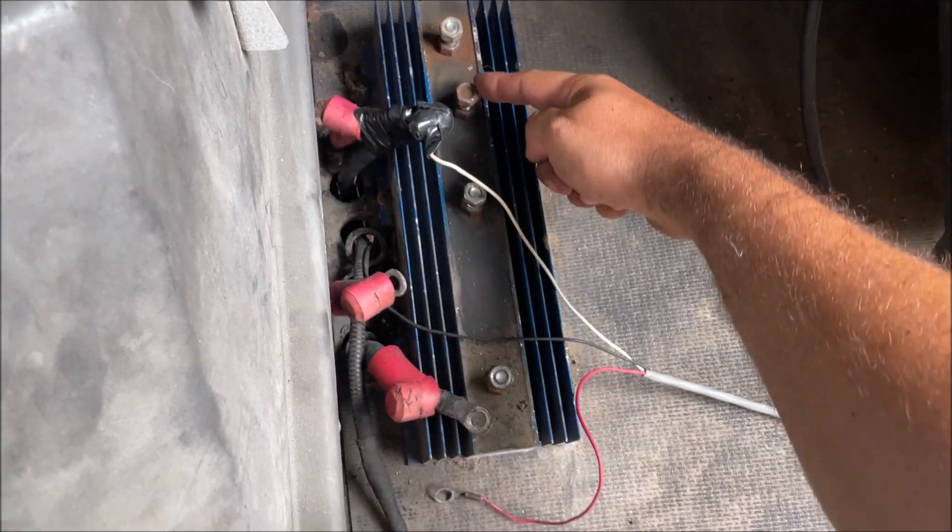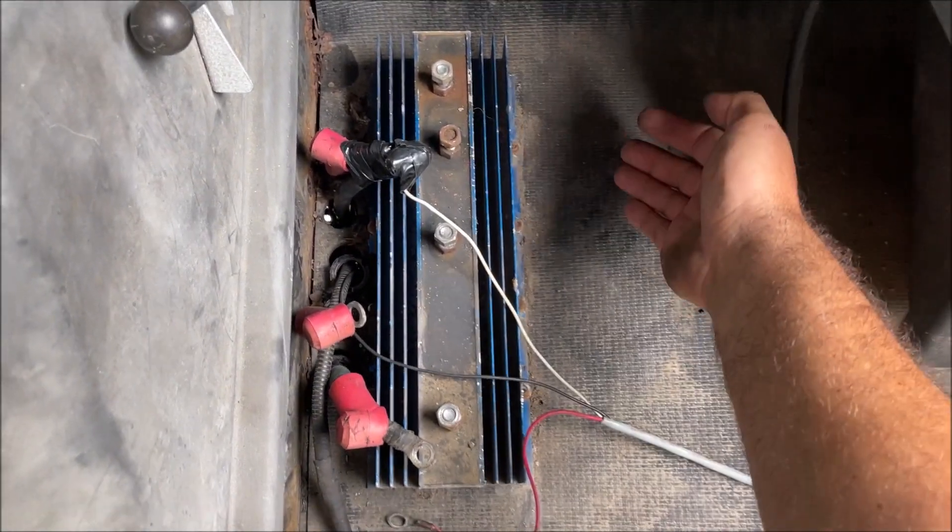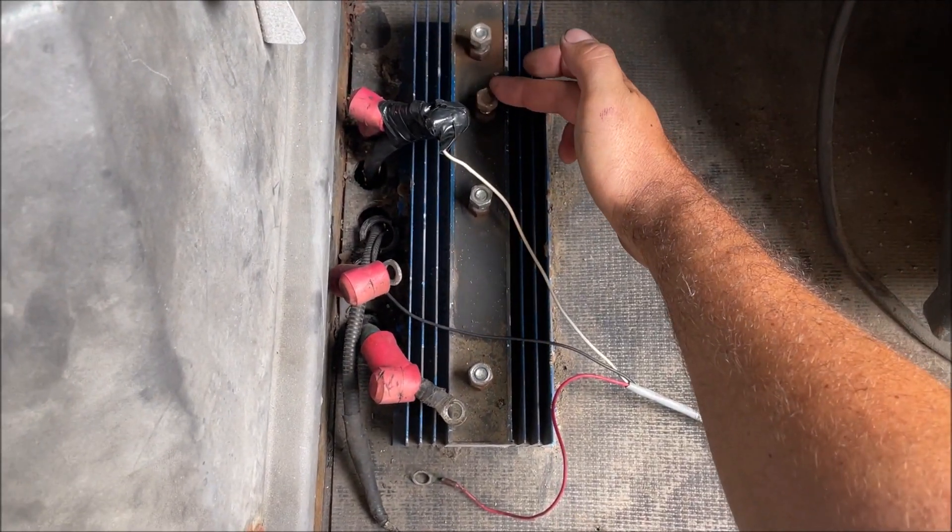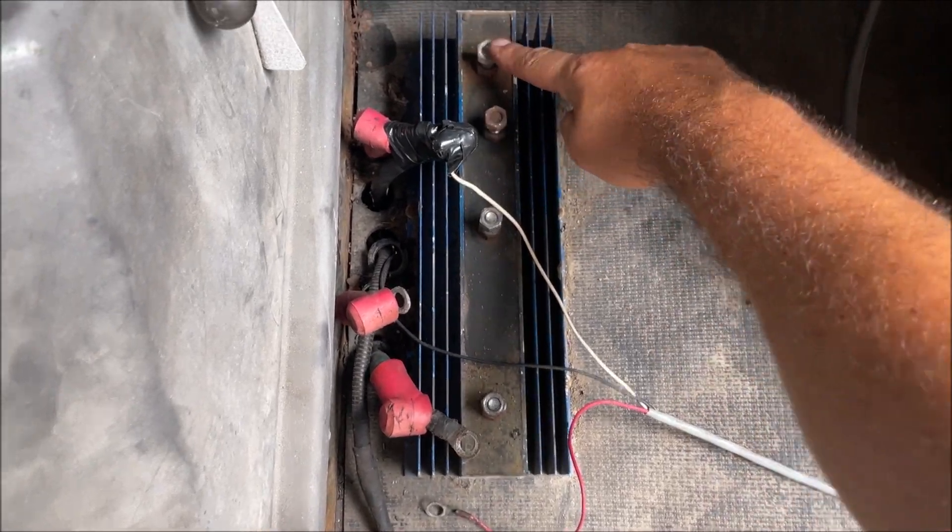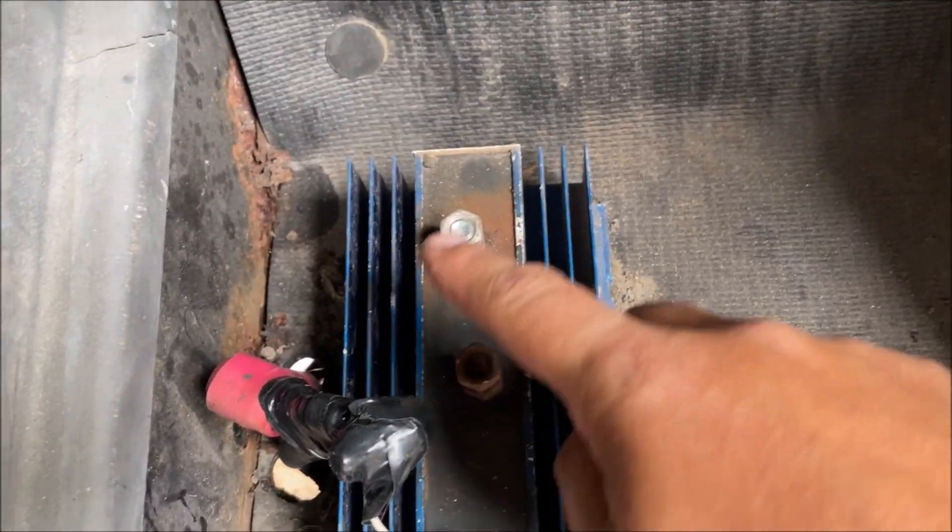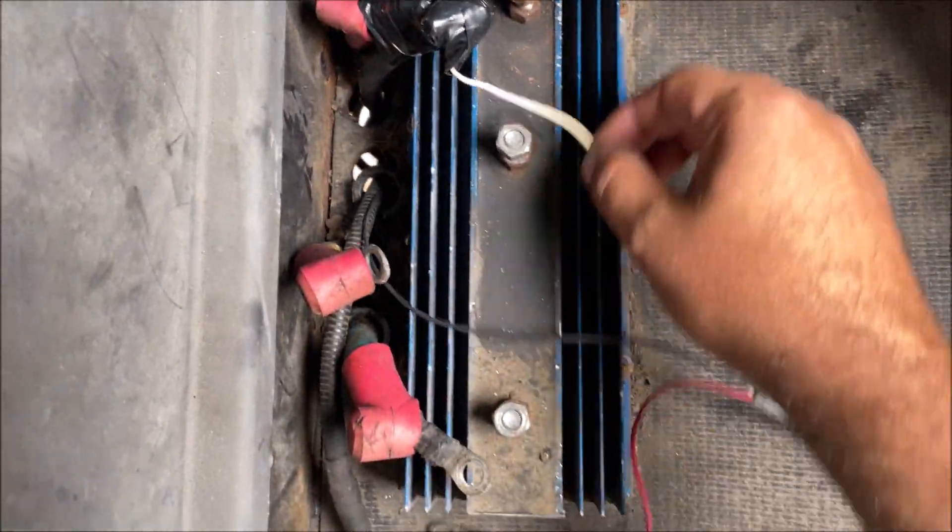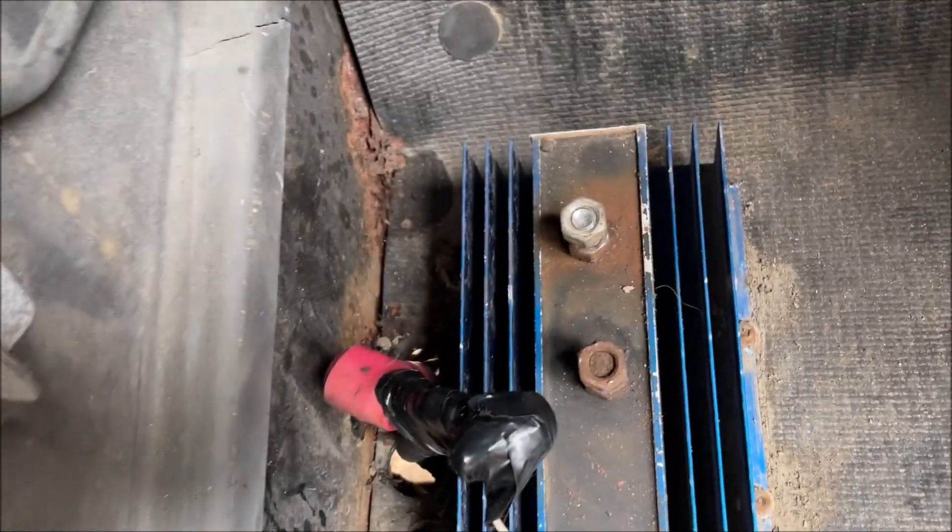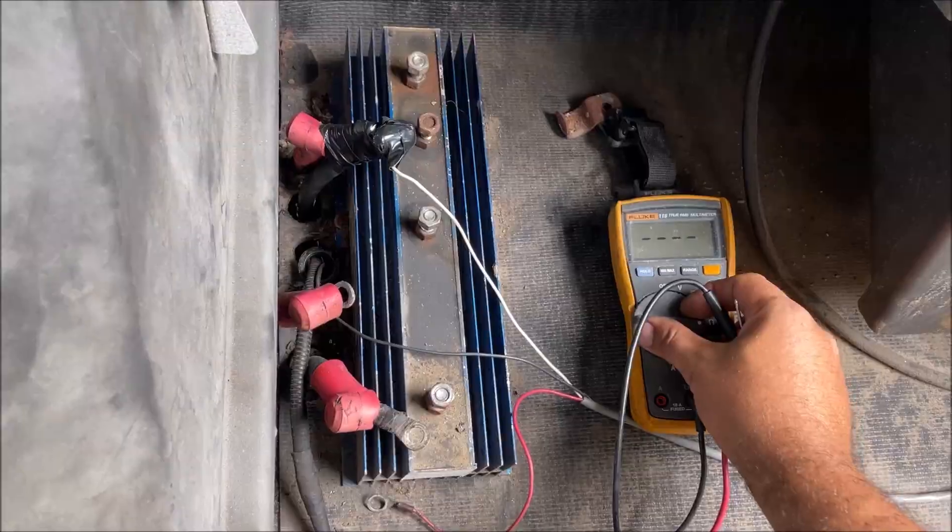Instead of putting it right here, see how that lug is a little off position? That's where the alternator is connected. They had the alternator and the battery connected right there. And if you look closely you can see how it's kind of a different color because it was heated up and it was cooked.